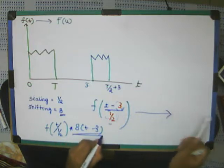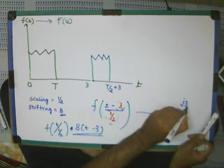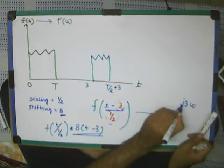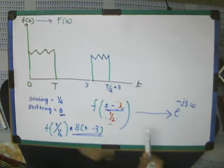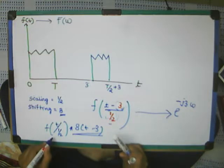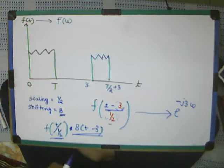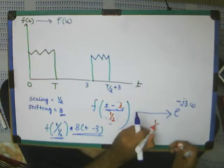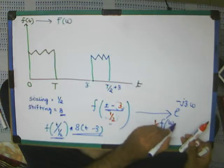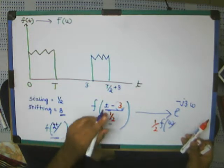So this T minus 3 factor will correspond to E raise to the power J3 into J3 omega and minus. Because this is E raise power, so putting it, it will be corresponding to this exponential. And this half divided by half will lead to multiplication in half. So this will become half F of omega by 2.